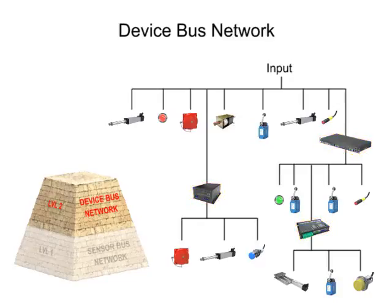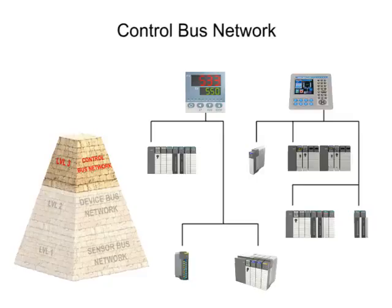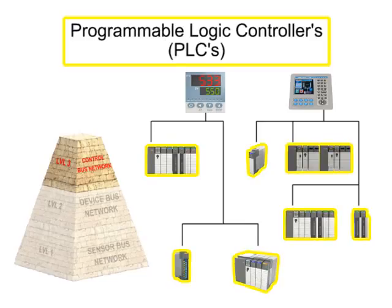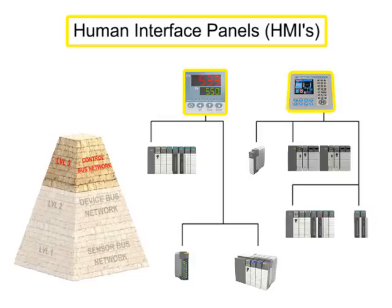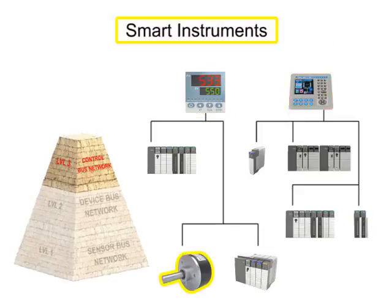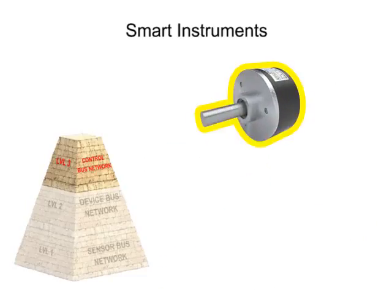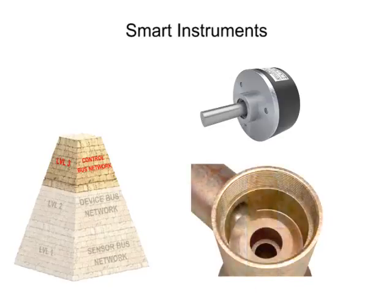Moving up the pyramid, the next increasingly complex level of fieldbus networking is the controlbus network. Controlbus networks are the most advanced networks used on the factory floor and data communication happens at a high level. PLCs or Programmable Logic Controllers are connected to each other alongside HMIs or Human Interface Panels to allow for complete configuration and control of every instrument on the network. Smart instruments capable of performing complex operations can also be connected at this network level. For instance, there might be a smart instrument that measures wear and tear on a valve. When the wear reaches a dangerous level, it will signal the controller that the valve needs to be replaced.